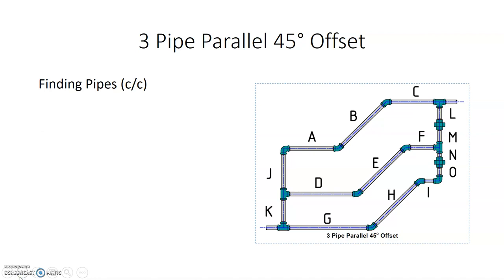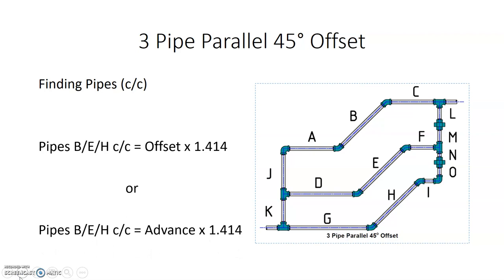To find the other three pipes — B, E, and H — these are all our travel pieces. No matter what pipe size or material, they will all have the same center-to-center measurement from 45 to 45. The formula is: offset × 1.414. So we take our offset, multiply by 1.414, and we get the center-to-center for B, E, and H. That's the end of the video.